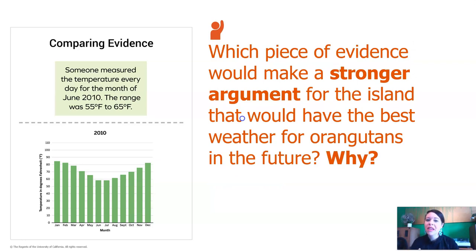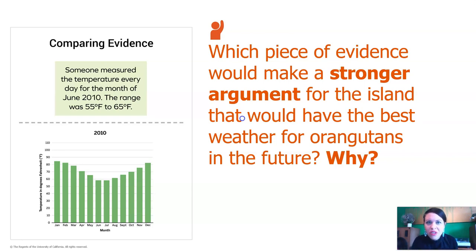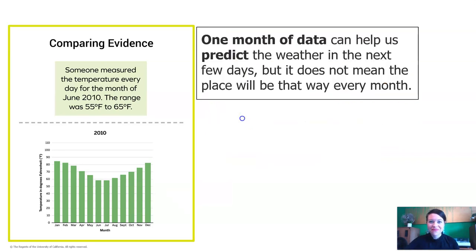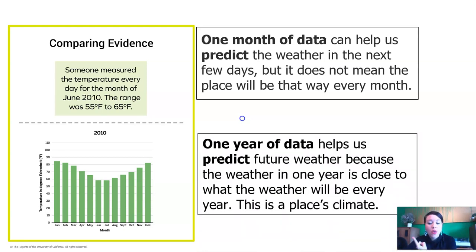Which piece of evidence would make a stronger argument for the island that would have the best weather for orangutans in the future? The bottom piece of evidence is stronger, because if we just look at June, what if one island gets freezing cold in January, or dries up with no rain in some month? We need to look at the entire year. One year of data reflects a place's climate, and climate is what we need to know to pick the island.